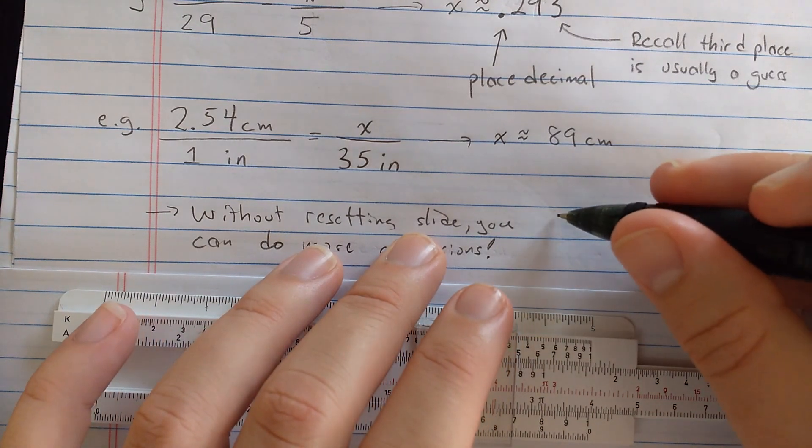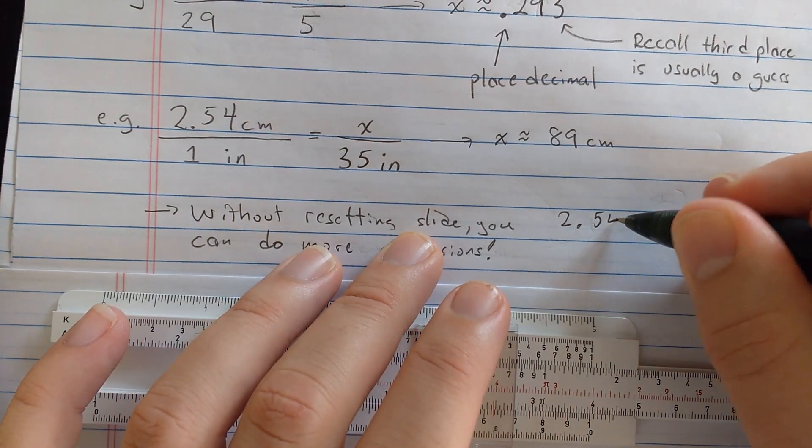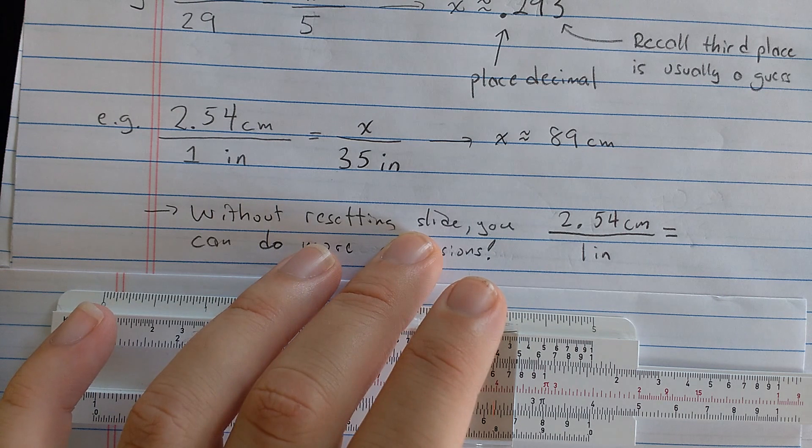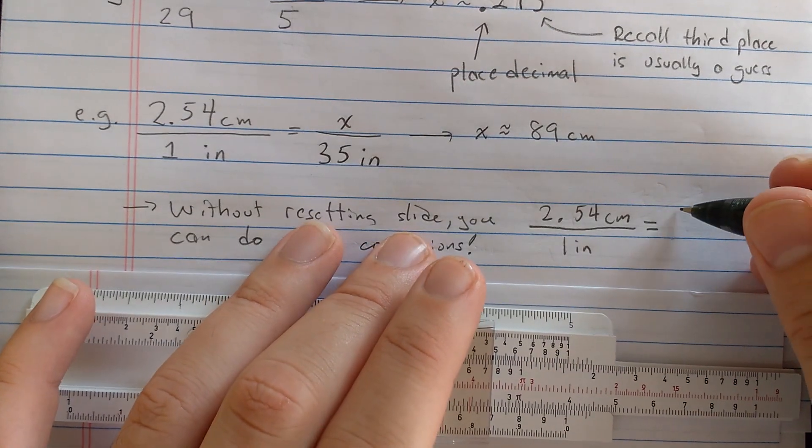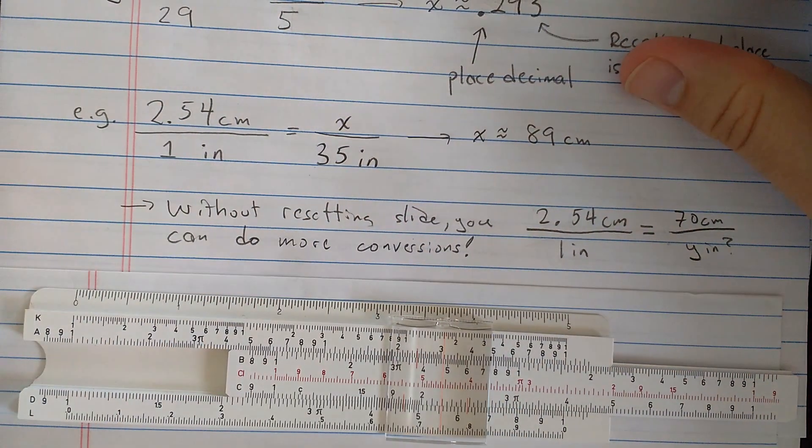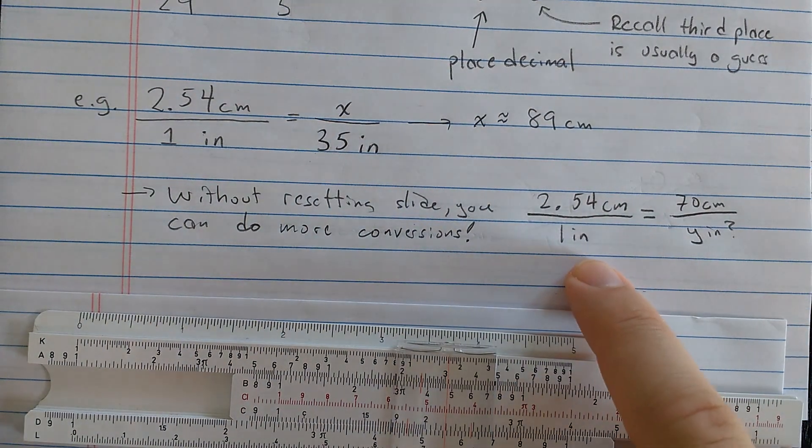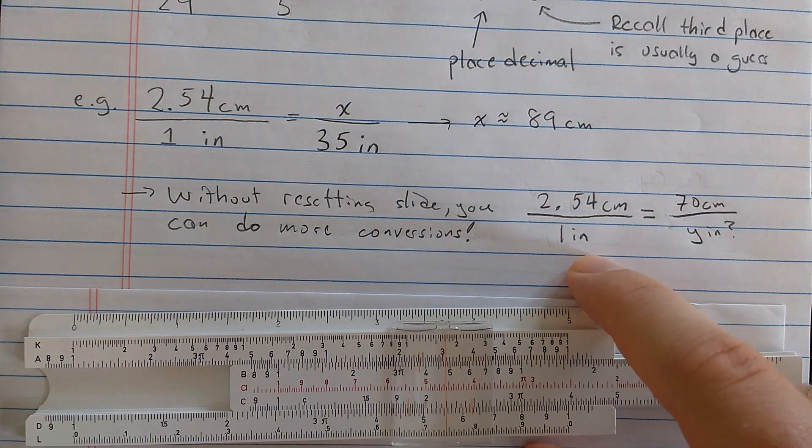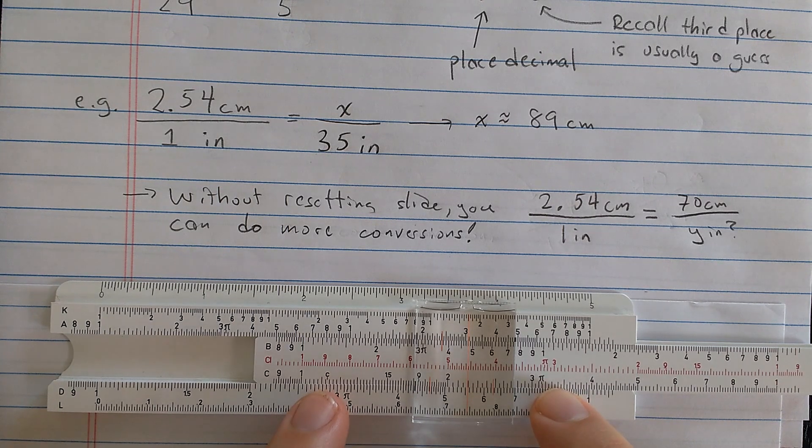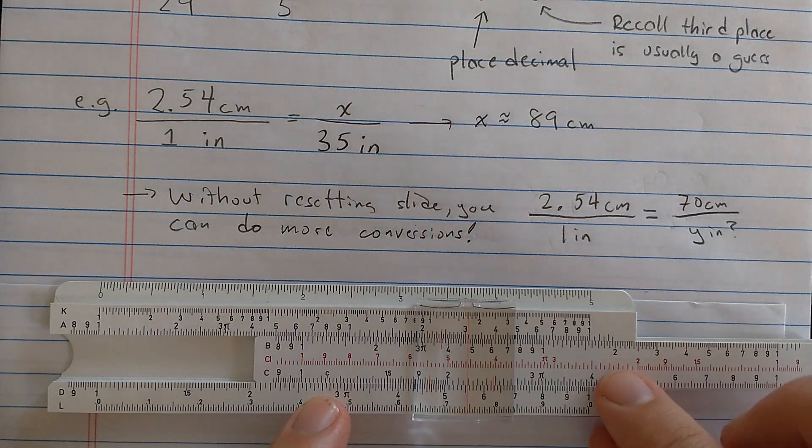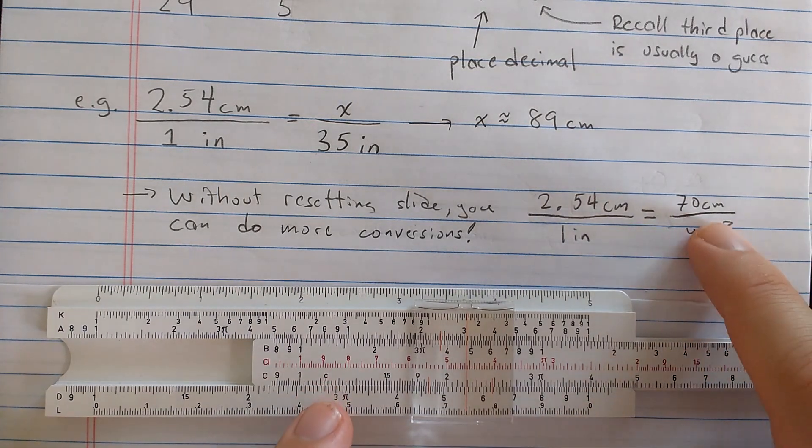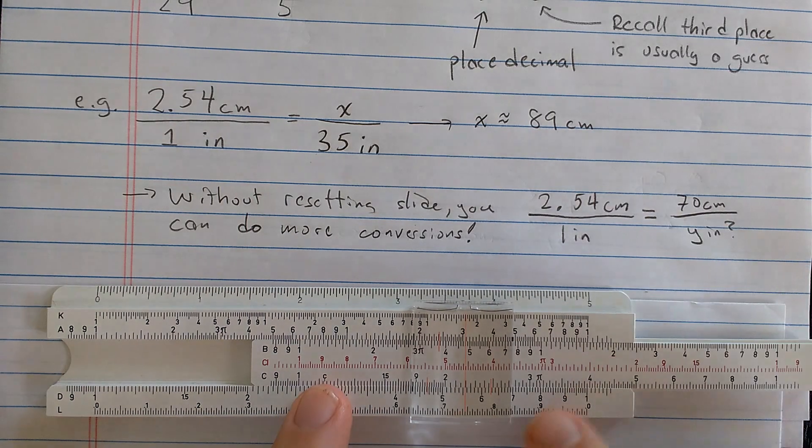So here, let's say that I want to keep the same conversion ratio, 2.54 centimeters is an inch. And I want to know, okay, well, if I have 70 centimeters, how many inches is that? Okay. Well, I've already set this conversion ratio, and I know that, well, I'm reading the centimeters on the D scale, and I'm reading the inches on the C scale. So, since I've already set the conversion factor, all I need to do here is to find the 70 centimeters on the D scale.